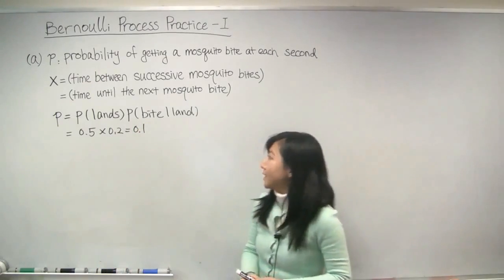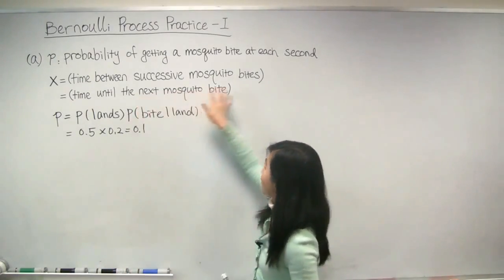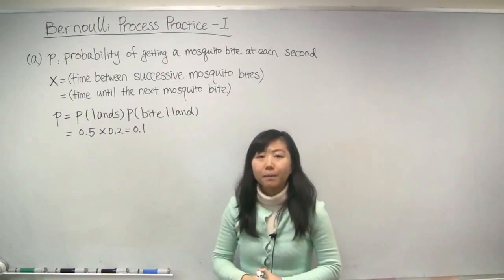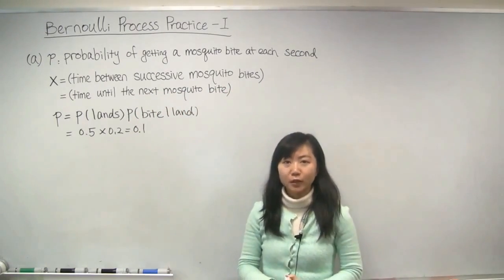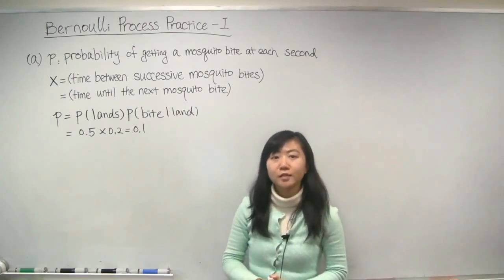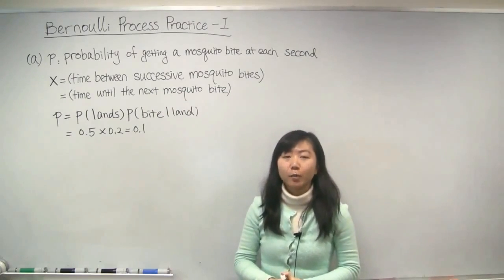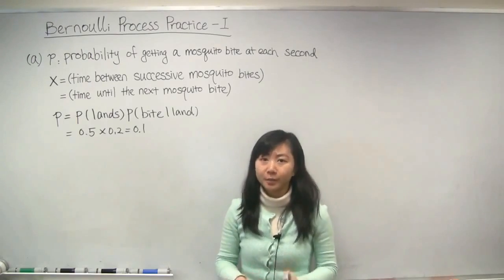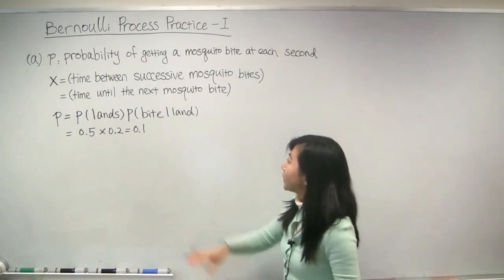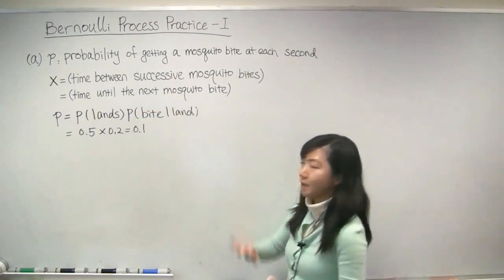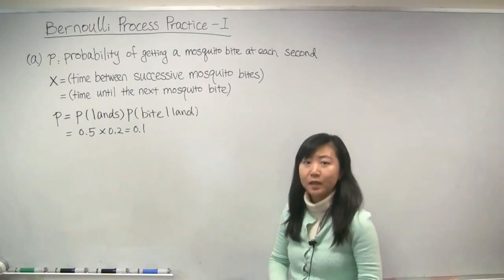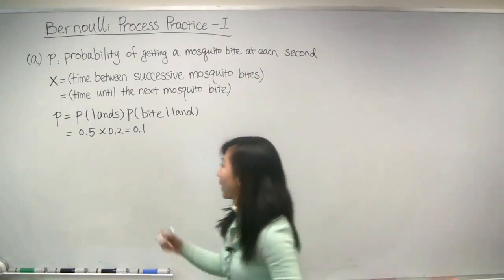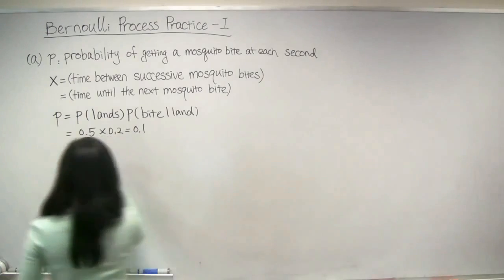Next, let us define x as the time between successive mosquito bites. Because of the memoryless property of the Bernoulli Process, which means the probability of getting mosquito bites at different times are all independent, x is equivalent to the time until the next mosquito bite. And x is a geometric random variable whose PMF is like the following.